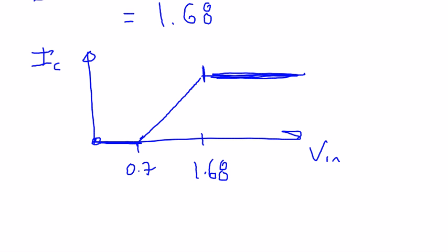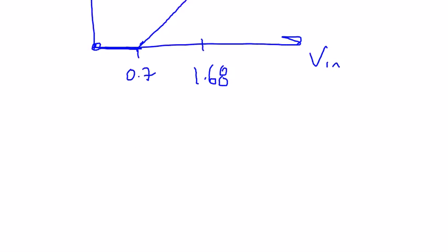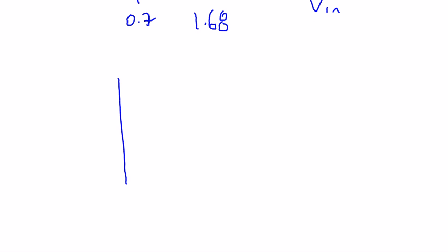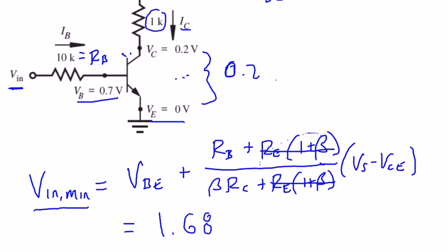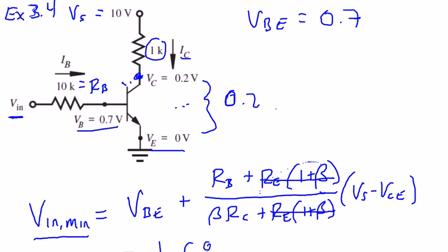I also included another graph in the notes as to why it's good to operate in the saturated region. So if you look at the input voltage and the voltage from the collector to the emitter, as well as the power. The collector to emitter voltage, so what that is, that's the difference between the voltage at the collector to the emitter.